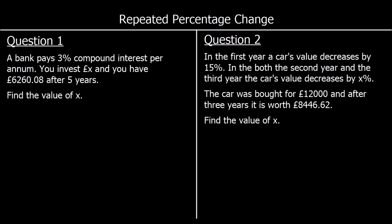Repeated percentage change. The first question says a bank pays 3% compound interest per annum, so every year we get 3% on top of the money we've got. That means every year we've got 100%, our original amount, plus 3%, so at the end of each year we've got 103% of what we had previously.